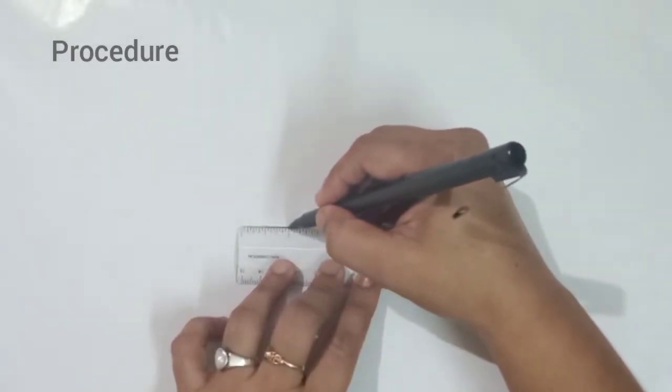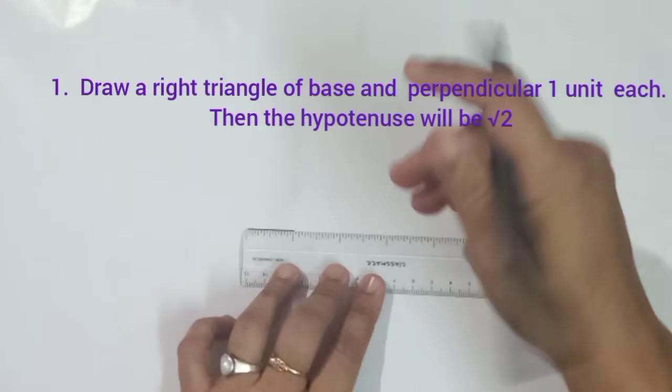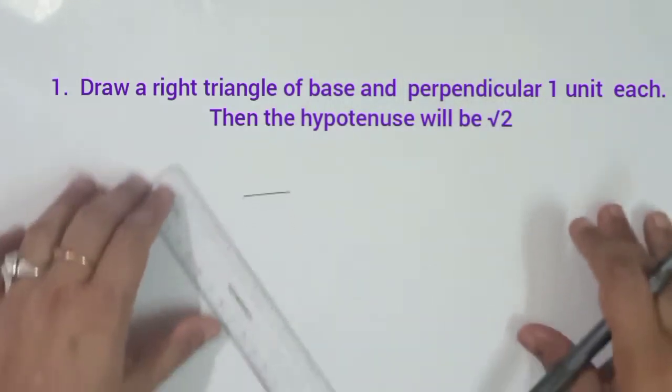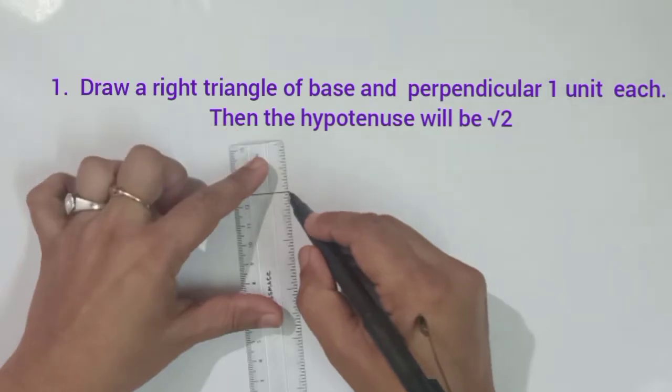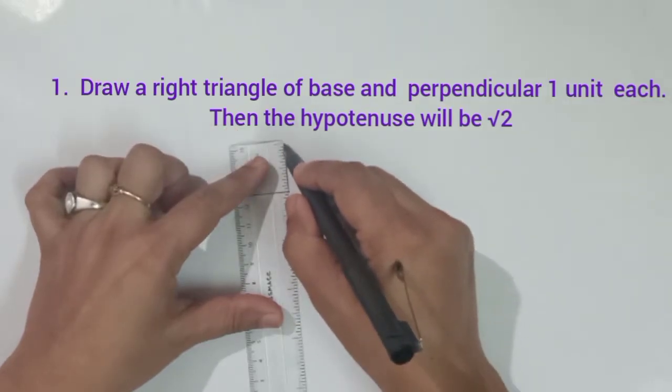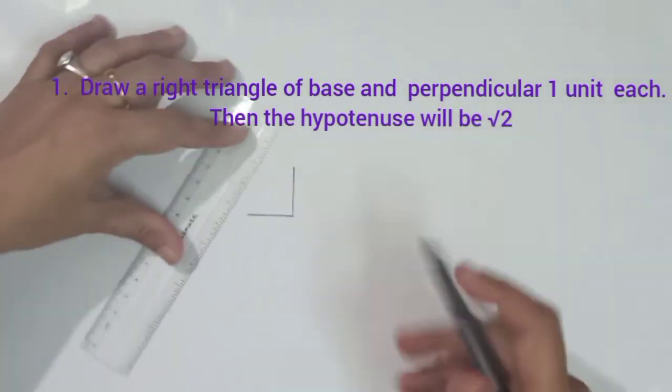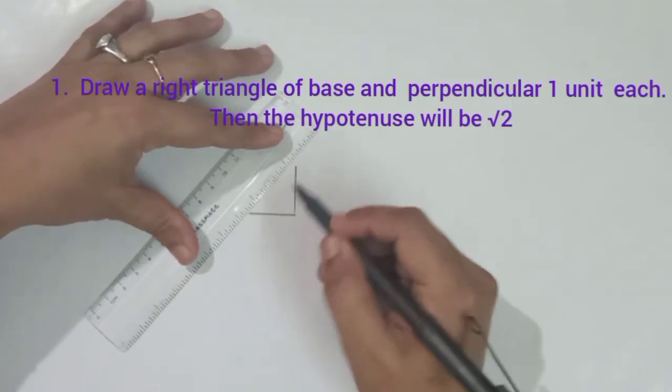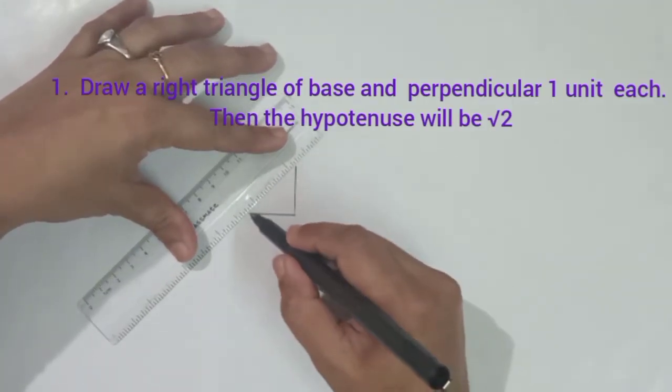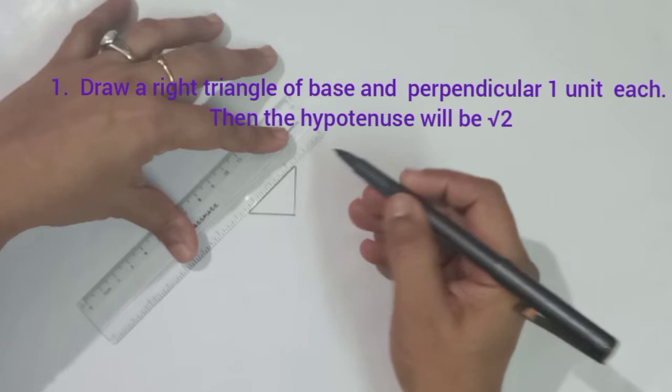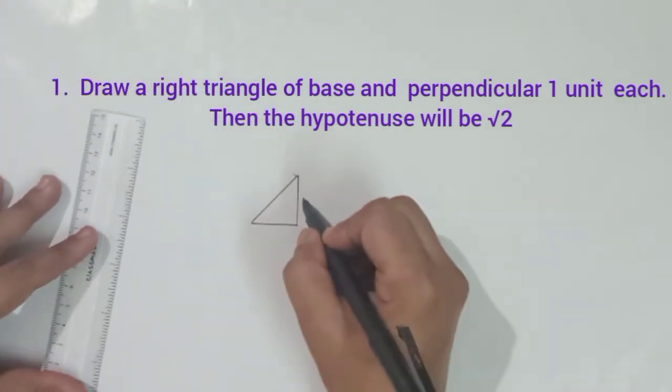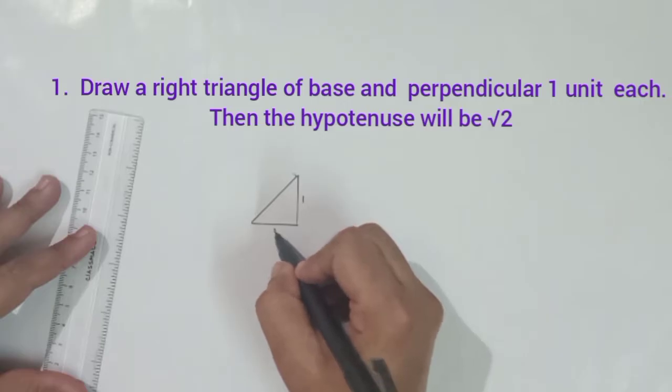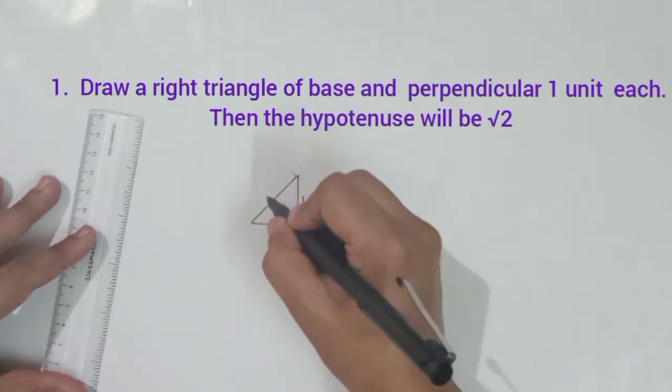Let's see how you will draw the spiral. First of all, draw a base of one unit. Then, a perpendicular of one unit on it. Now, join the two sides. You will get the hypotenuse which will be root 2 according to Pythagoras theorem.